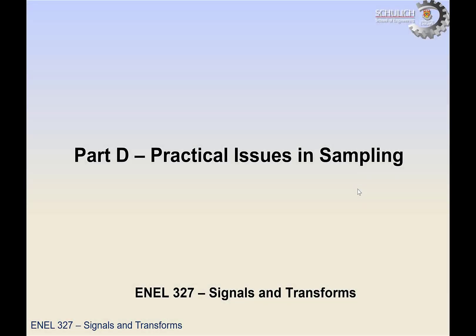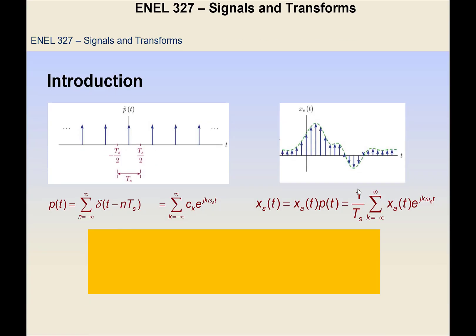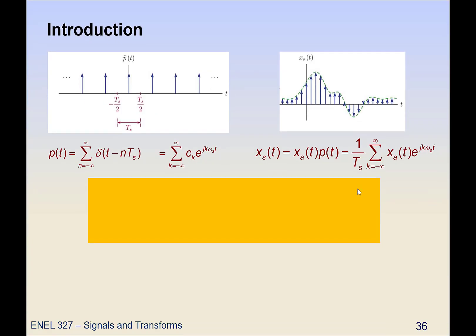Alright, so now we're going to talk about some practical issues in sampling. The problem with this impulse train model is that unfortunately there's no such thing as an ideal impulse train. It's impossible to sample instantaneously.